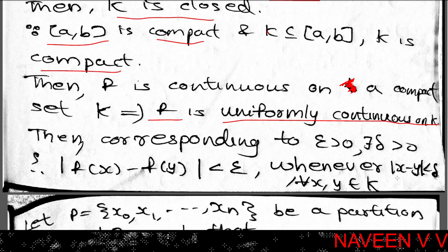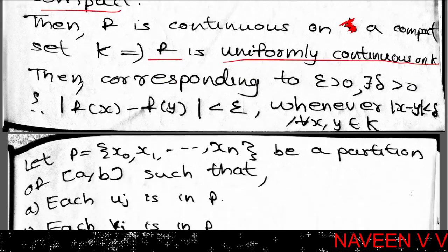Since no point s_j lies in K (each s_j is in the open interval (u_j, v_j) which is in O), function f has no discontinuities in K. Therefore f is uniformly continuous on K. Corresponding to this there exists delta greater than 0 such that |f(x) minus f(y)| is less than epsilon whenever |x minus y| is less than delta, for all x, y belonging to set K.